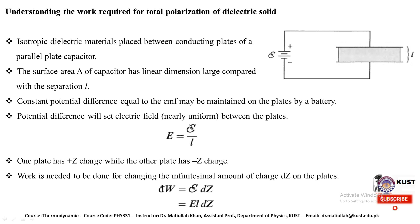Capital epsilon will be equal to E multiplied by L. We need to put the value of this epsilon into the work equation. So epsilon will be represented by E, where capital E is the electric field and L is the separation between the plates of this capacitor. This equation will then be DW equal to E·L·DZ.